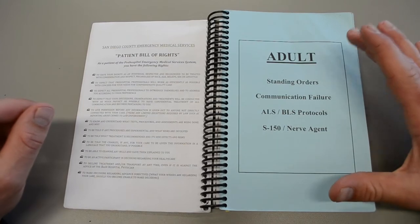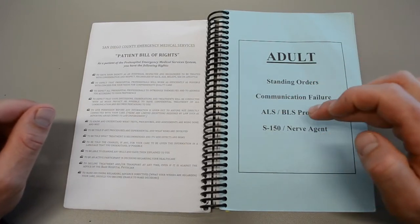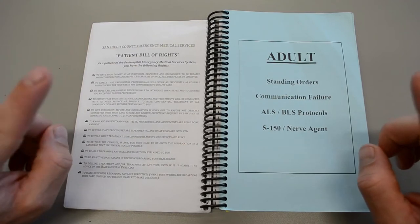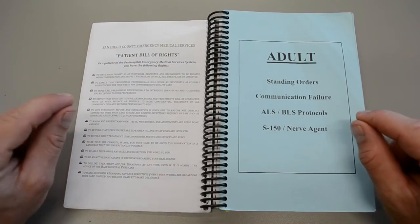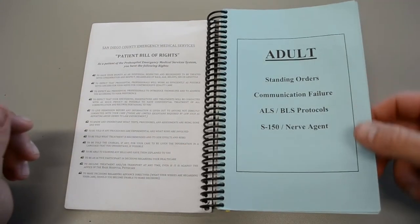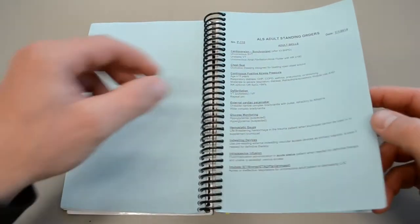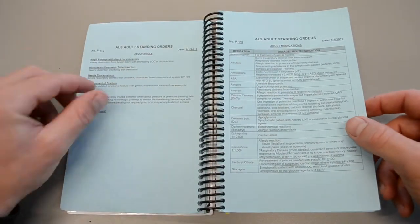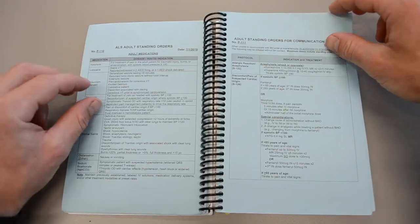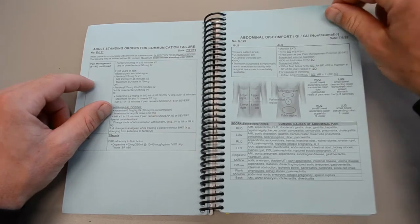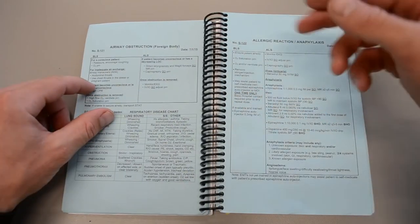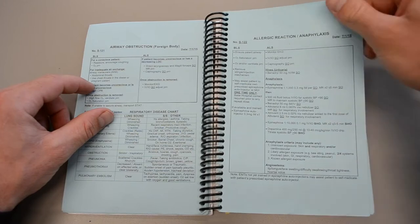These are your adult standing orders communication failure ALS and BLS protocols. Now we are primarily concerned with the BLS protocols. This will go through all of the protocols for the different types of chief complaints people present with, starting off with abdominal discomfort and we continue through airway obstruction, allergic reaction, anaphylaxis.